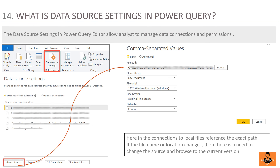Question 14: What is Data Source Settings in Power Query? Data Source Settings in Power Query Editor allows analysts to manage data connections and permissions. This option is found in the Home tab of Power Query Editor. In the screenshot shown, there are a number of connections with CSV files and an Excel file. After viewing the list of sources under Data Source Settings, the path of CSV files can be changed by clicking the Change Source button.